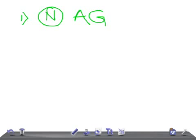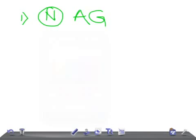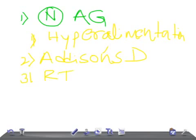Now let's move on to metabolic acidosis with a normal anion gap. There's a mnemonic for that but it's a bit unusual. The first condition is hyperalimentation. Then you have Addison's disease.